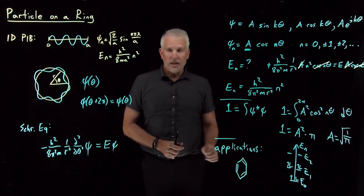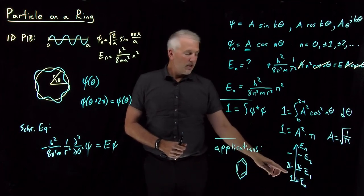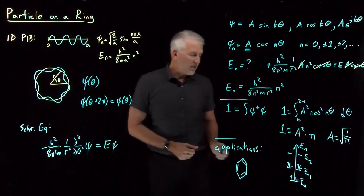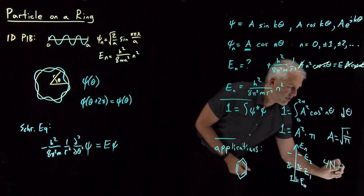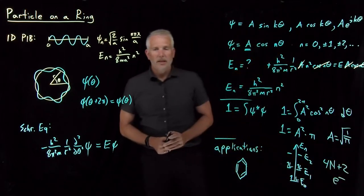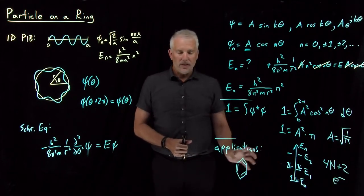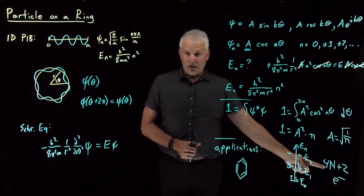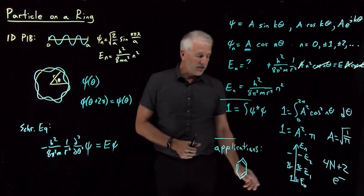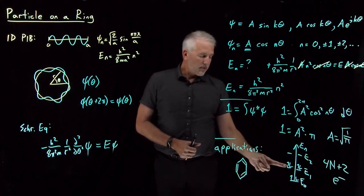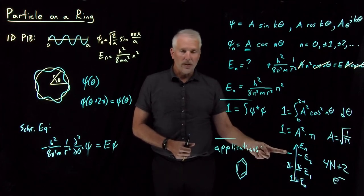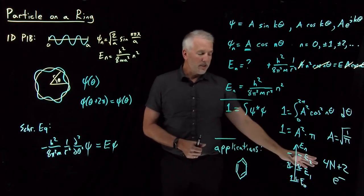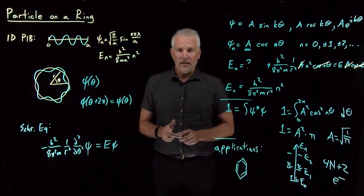The reason benzene is a very stable aromatic compound is that it completely fills the ground and first excited states. From organic chemistry, Hückel's rule states that a molecule with 4n+2 electrons is aromatic — and this is a direct consequence of the particle-on-a-ring model. With two electrons per energy level, 4n+2 electrons corresponds to 2n+1 filled levels. Six electrons fills up to give aromatic benzene; ten electrons would give the next aromatic ring size. So Hückel's rule about aromaticity is really an example of the particle-on-a-ring quantum mechanical model.